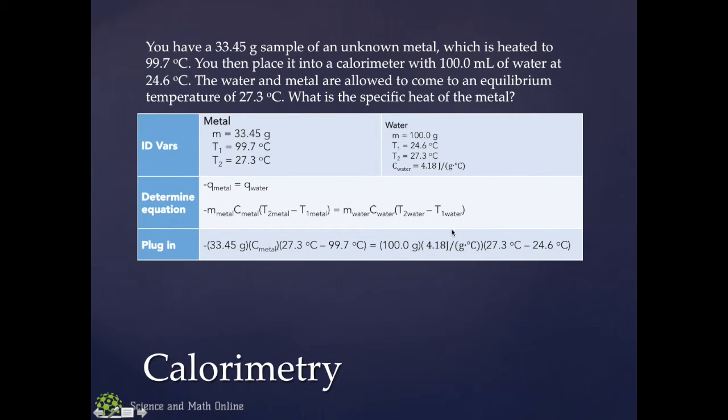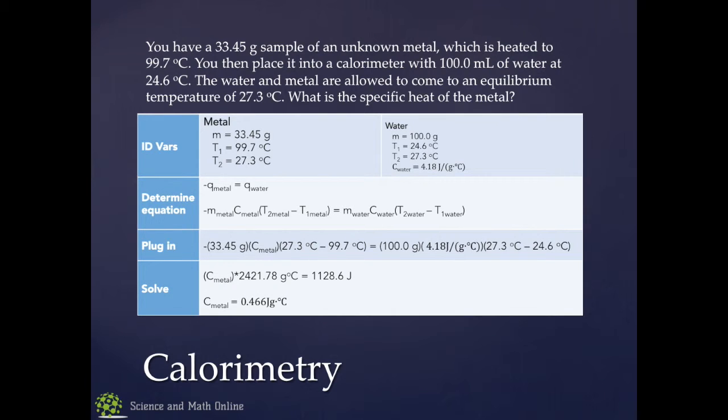All right, then I plug in everything. And I've got everything plugged in except for C metal. So, do my algebra and you get that the metal has a specific heat of 0.466 joules. And there should be a slash there per gram degree C. And that's basically how you do a calorimetry problem. It's a very common lab to do. And this is kind of how you do the calculations. You can then try to identify, look at a table, and try to identify what metal has that specific heat value. And so, that is heat with calculations. And we will talk about intermolecular forces and states of matter in the next unit.